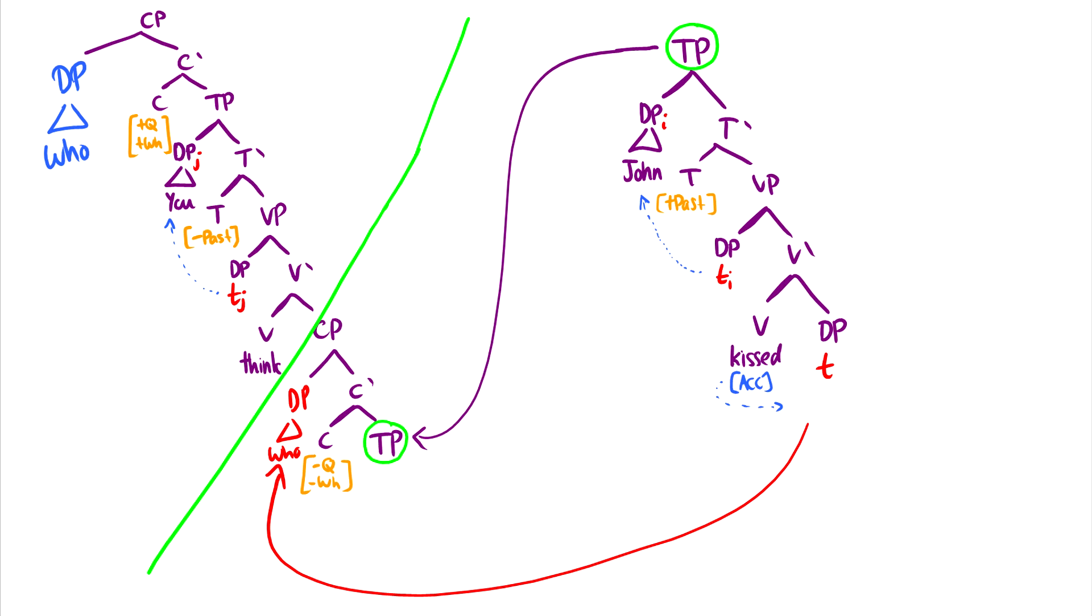But this CP head C does not pull for a WH word. It also does not pull for a question. But the C head in the matrix clause is looking for that WH word and that question. So it's going to stop here in spec CP, become a trace, and then continue its journey up to satisfy this C head. So now this C head is satisfied, and it's okay.